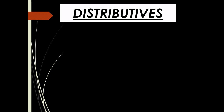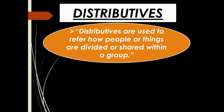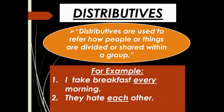Now let's look at another determiner type: distributives. Distributives are used to refer to how people or things are divided or shared within a group. Distributive determiners are words that give information about the noun in a sentence. They may refer to a group or every individual in the group. For example: 'I take breakfast every morning' and 'They hate each other' — here 'each' and 'every' talk about individual members of a group.